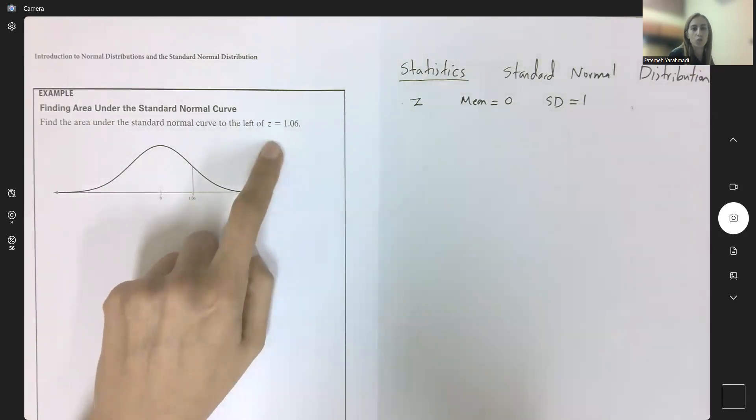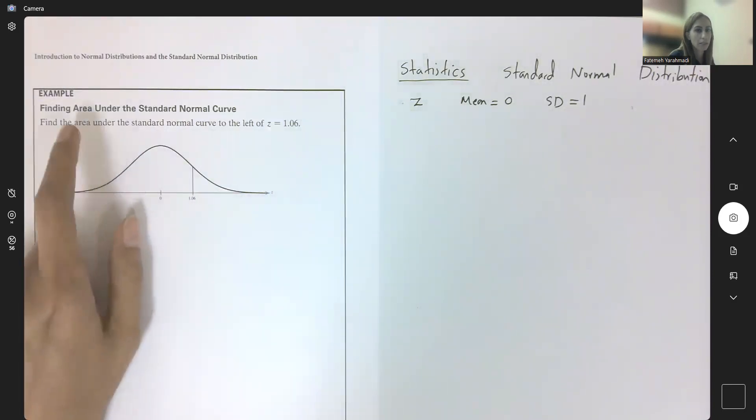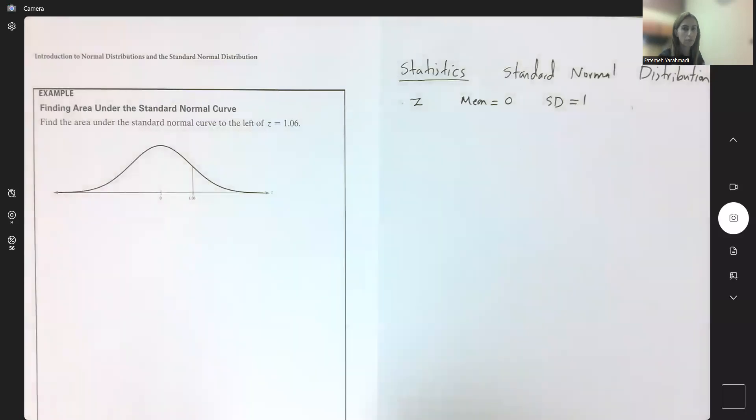z is given here. I didn't do any conversion in this question. The author says your z is 1.06. What is the probability, what is the area to the left side of z?